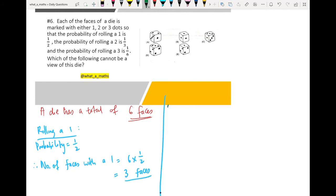Next, rolling a 2. The probability of getting a 2 is equal to 1 over 3. So number of faces with a 2, I will get 2 faces with the number 2.